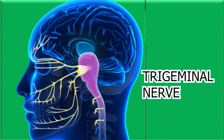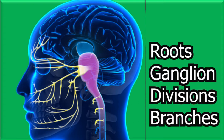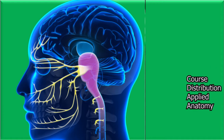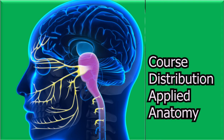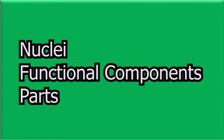We'll look at various parts of the nerve, like its root, its ganglion, its divisions, and then the branches from these divisions. Our series on this topic will also consider the course of the various divisions and the distribution, and the applied anatomy. But for today's episode, we'll consider the basic information around the nerve, we'll look at the nuclei, the functional components, and then the parts.